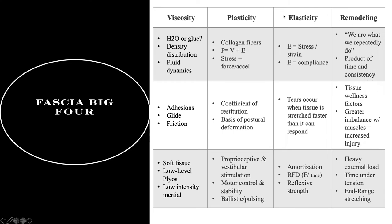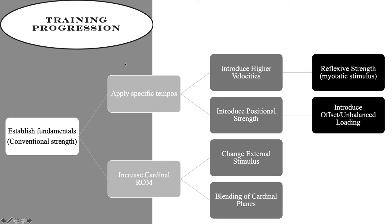Those big four properties are worth reviewing. On progressing movements: be adept with foundational movements and fundamental patterns before considering anything more advanced. Once proficient, apply specific tempos, increase ranges of motion, add velocities, and introduce positional strengths specific to what the athlete shows as weak. Then change external stimulus, blend cardinal planes, and finally add the myotatic stimulus or reflexive properties, introducing offset and unbalanced loading as the last layer.